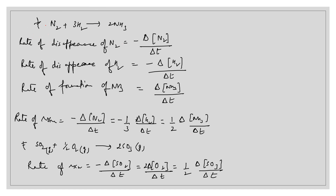For example, take the reaction where nitrogen combines with hydrogen to form ammonia. The balanced equation is: N₂ + 3H₂ → 2NH₃. We can express the rate in three ways: rate of disappearance of N₂ = −ΔN₂/Δt; rate of disappearance of H₂ = −ΔH₂/Δt (negative sign because concentration decreases); and rate of formation of NH₃ = ΔNH₃/Δt.